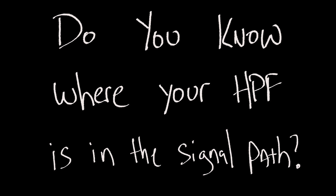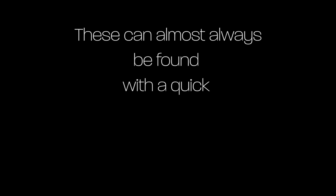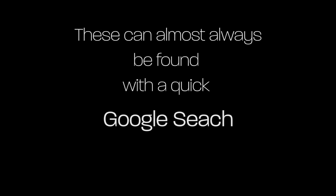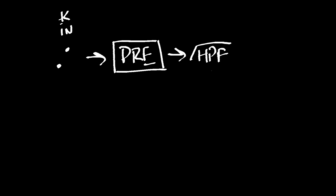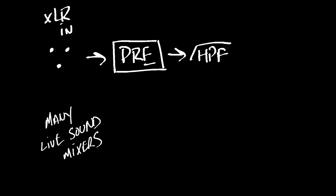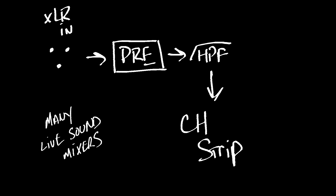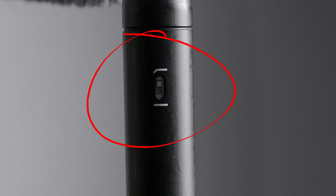It's important to understand where the high pass filter is located in your console's architecture. You want to consult the block diagram for your console to find this information and choose how to use it accordingly. In situations where you have a high pass filter after the mic preamplifier, which is in many mixing consoles, you'll do best to apply the high pass filter or low cut on the microphone itself. This is your first line of defense against unwanted low frequencies, and choosing the correct setting at the microphone can be a critical part of establishing a good mix.